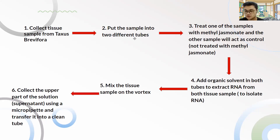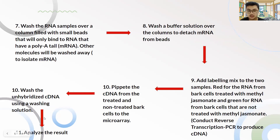We then add an organic solvent to both tubes to extract the RNA from both tissue samples, to ensure RNA isolation. We mix the tissue samples on a vortex, collect the upper part of the solution using a micropipette, and transfer it into a clean tube. After that, we wash the RNA samples over a column filled with small beads that bind to RNA with poly-A tails, so other molecules are washed away, further isolating the mRNA.